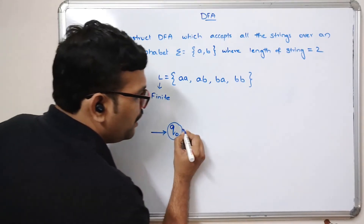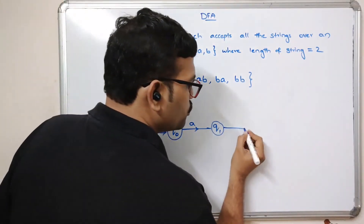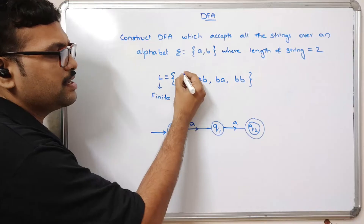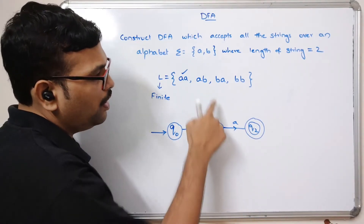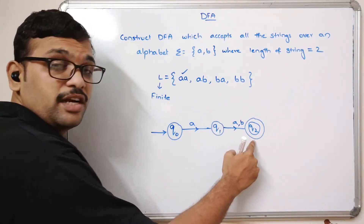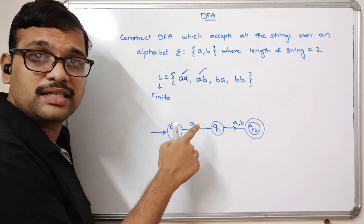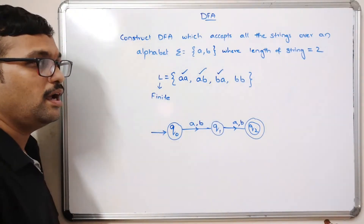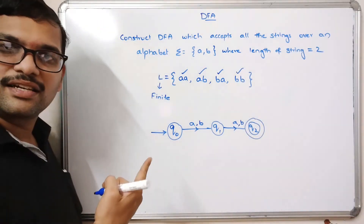To construct the DFA: from q0, on a or b it moves to q1. From q1, on a or b it moves to q2, which is the final state. So aa: q0→q1→q2 accepted. ab: q0→q1→q2 accepted. ba and bb similarly accepted.